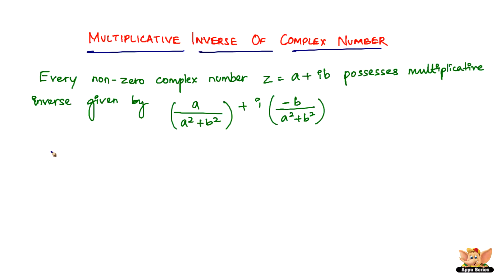Now, say for example, we have a complex number z equals 3 minus 2i. If you have to write the Multiplicative Inverse of this complex number, you first have to identify which is a and which is b. Obviously, a is 3 and b is minus 2. So, all that you have to do is substitute the values of a and b into the formula.